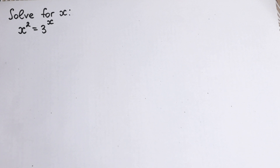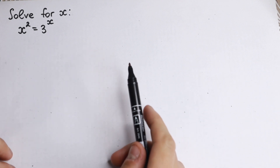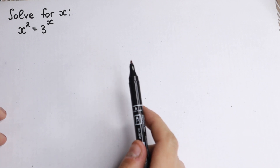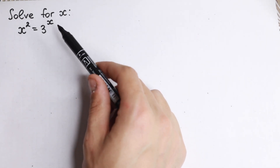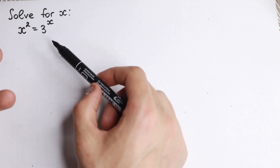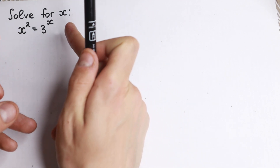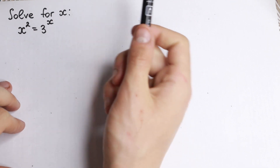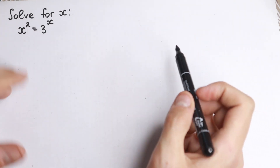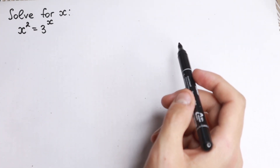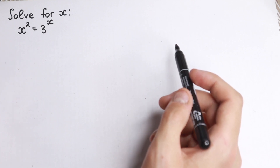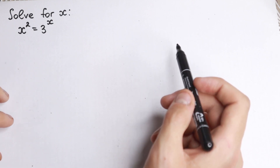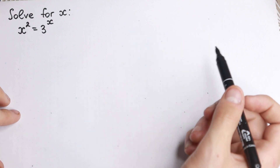Hello everyone, welcome back to High Mathematics! We have a really interesting exponential equation today. On the first side this problem looks like an easy one, because we have no huge powers — we have 2, 3, and x. It's a small equation, but we can't solve it in just 2-3 minutes; it may take around 8 minutes. I hope you enjoy this video.